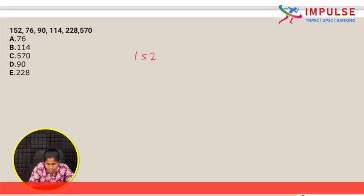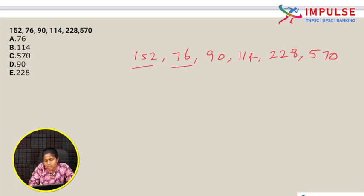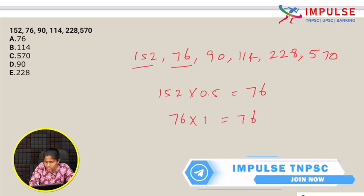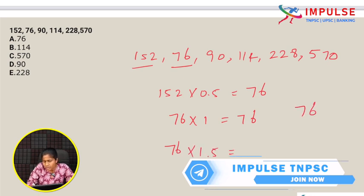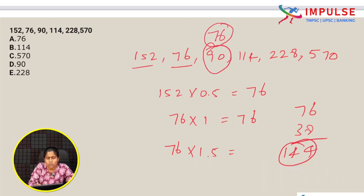Next question: 152, 76, 90, 114, 228, 570. The logic: 152 into 0.5 is 76. Then 76 into 1.5 is 114, but the series shows 90. The multipliers are 0.5, 1.5, 2, 2.5 — so 76 into 1.5 should be 114, meaning 90 is the wrong number.